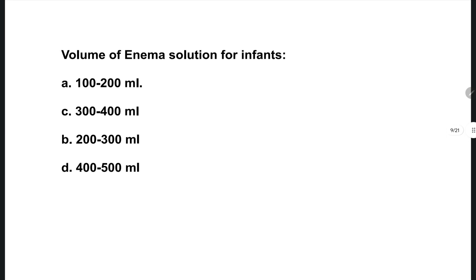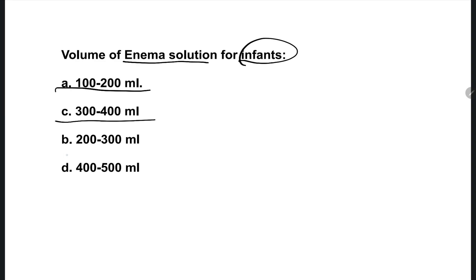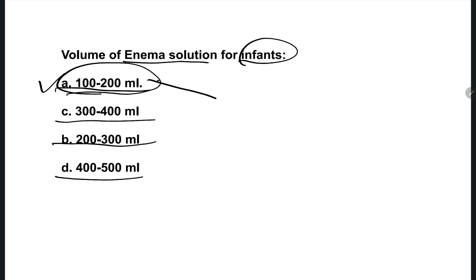The next question: the volume of enema solution for infants. How many ml of enema solution can we give for infants? Options are: 100 to 200 ml, 300 to 400 ml, 200 to 300 ml, 400 to 500 ml. The right one is option A — 100 to 200 ml is the average amount of enema solution for infants; it may be up to 250 ml.